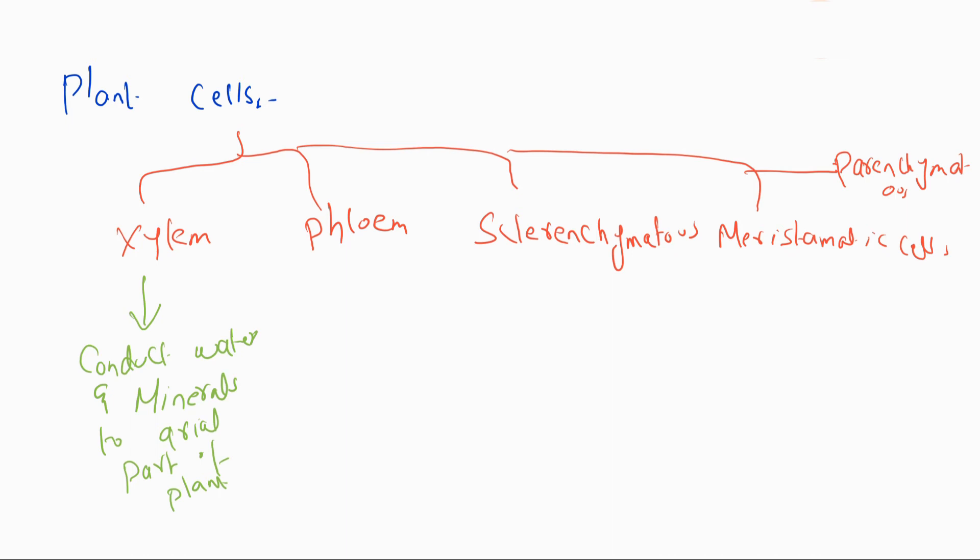Second type is phloem cells - they provide food to the plant. Next is sclerenchymatous cells, which give support to the plant. Next is meristematic cells, which produce new cells for growth and development of the plant. And parenchymatous cells store food.